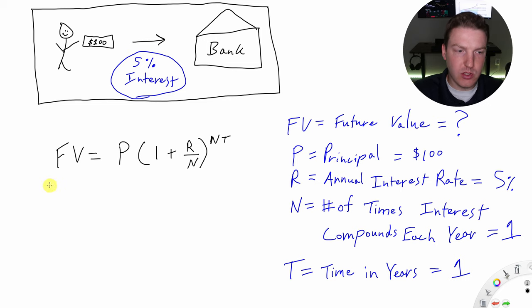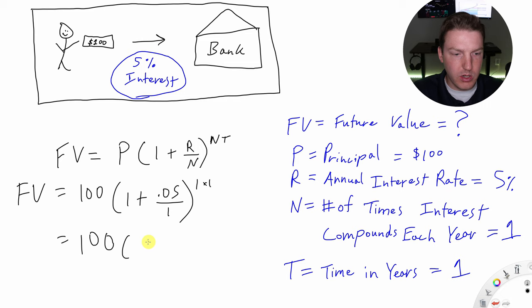Now let's go ahead and solve this formula for this scenario. The future value is equal to that principal amount of 100, multiplied by 1 plus R divided by N, which we know R is that interest rate of 5%, and N is 1. And then up in the exponent, we will do 1 times 1, which is just 1. So we can see that this whole value here is just equal to 100 times 1.05, which is equal to 105.